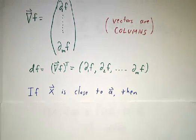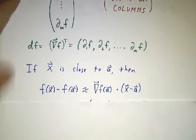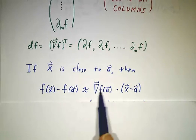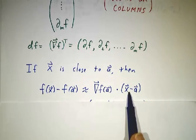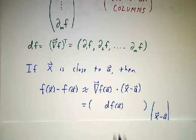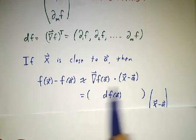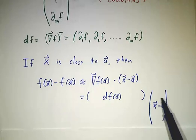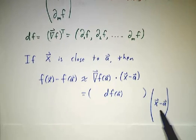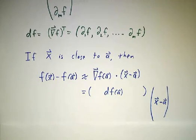So if x is very, very close to a, then we have the expansion that the change in f is approximately the gradient dotted into (x-a). Or if you prefer, it's the row df times the column (x-a).